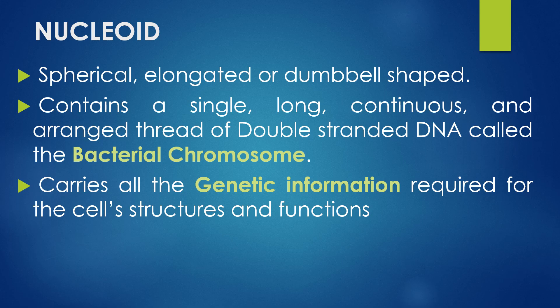The nucleoid is spherical, elongated, or dumbbell in shape. It contains a single long continuous double-stranded DNA arranged as bacterial chromosomes. The nucleoid carries the genetic information required for cell structure and its functions.